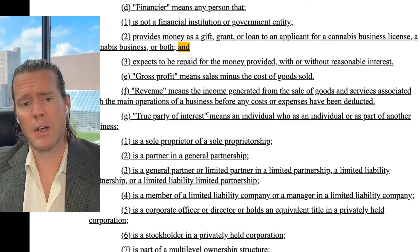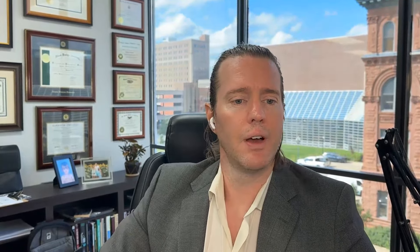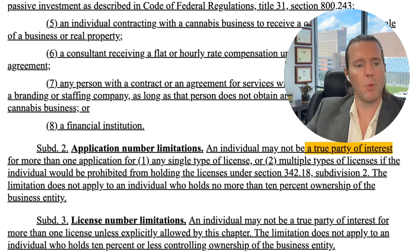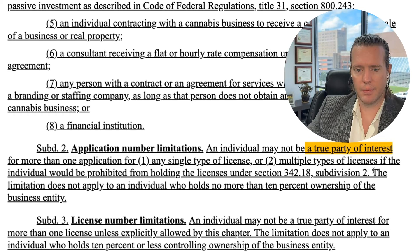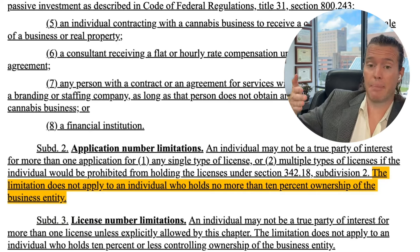It says 'means an individual who is a member of a limited liability company.' So you just can't be a 9% member and then collateralize their 91% with an assignment or share restriction agreement — granted, membership units aren't shares, but it's essentially the same thing — and then push it all onto the wealthy person after a victory in the lottery. However, sub-2, applicant number limitations: an individual may not be a True Party of Interest for more than one application for any single license type. But here is a loophole you could drive a dump truck through. Why do you even put this in the law when the exception is that big?